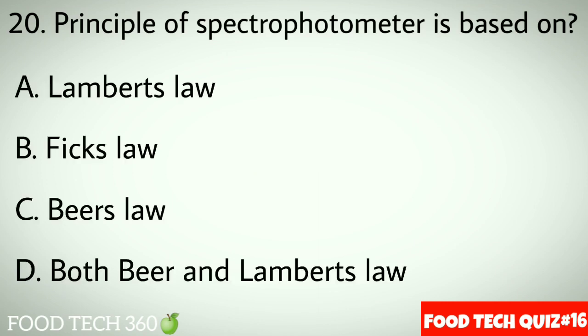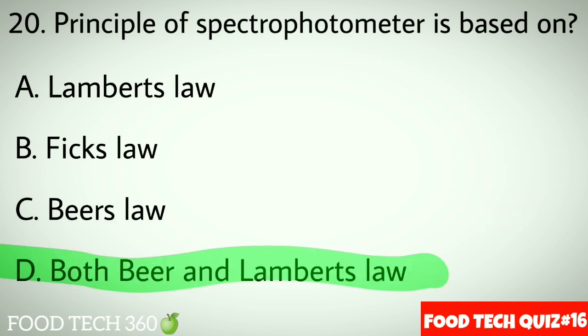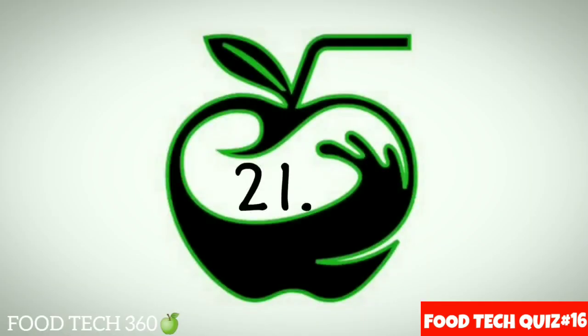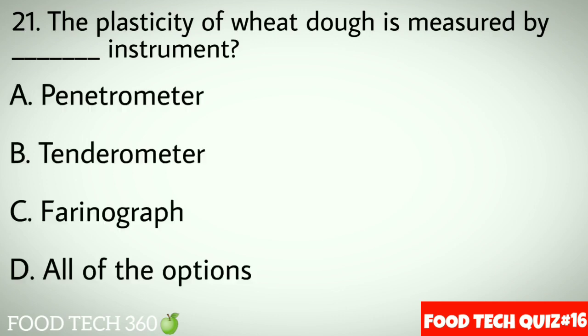Question No.20: Principle of spectrophotometer is based on — Options A: Lambert's law. B: Fick's law. C: Beer's law. D: Both Beer and Lambert's law. Correct answer D: Both Beer and Lambert's law.